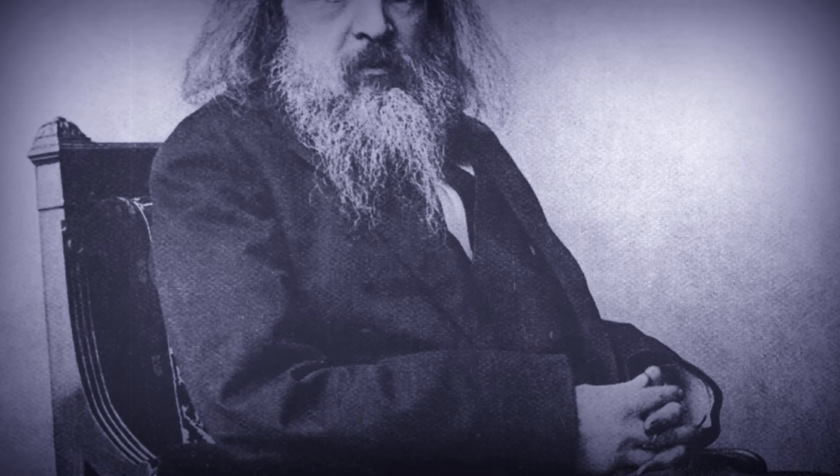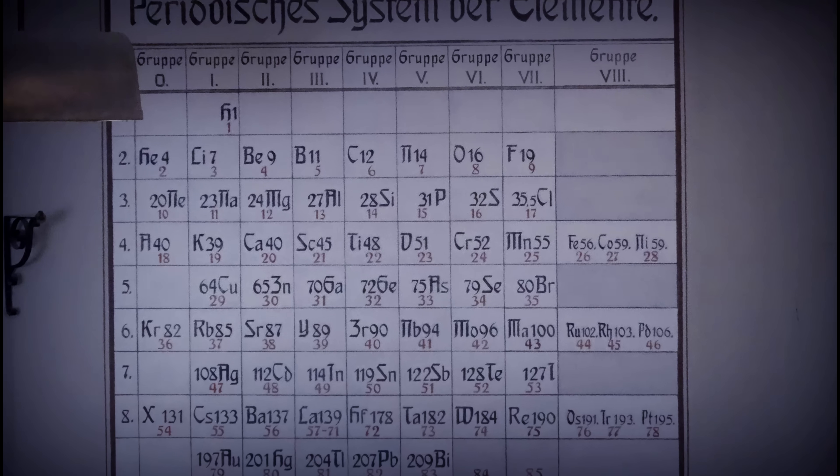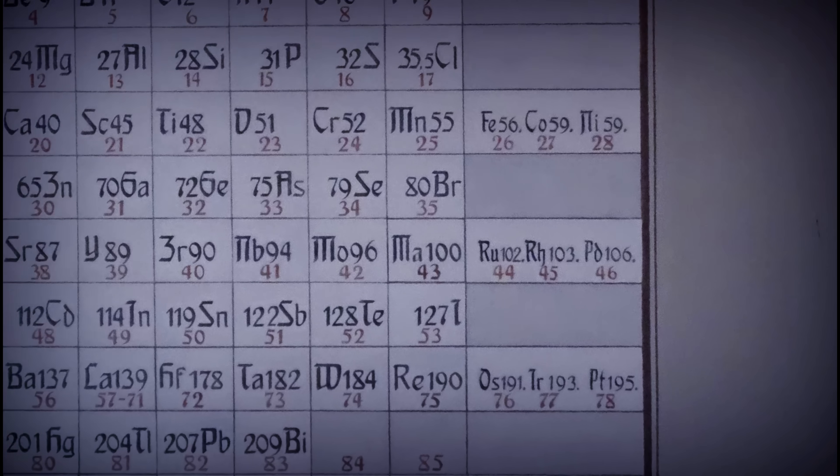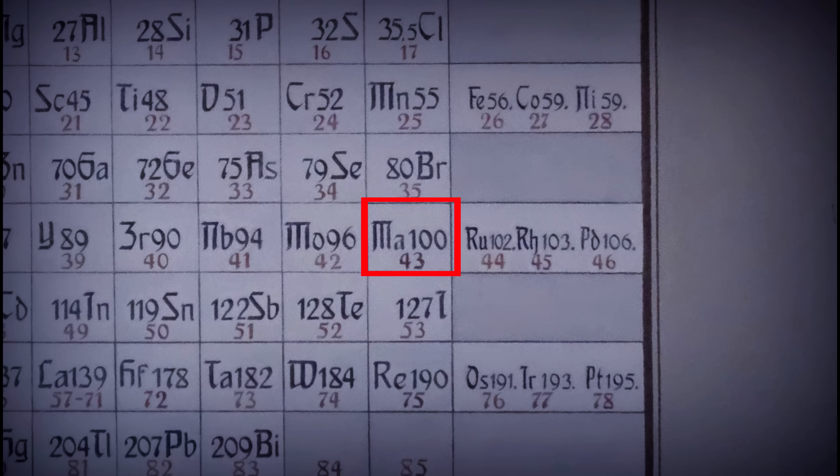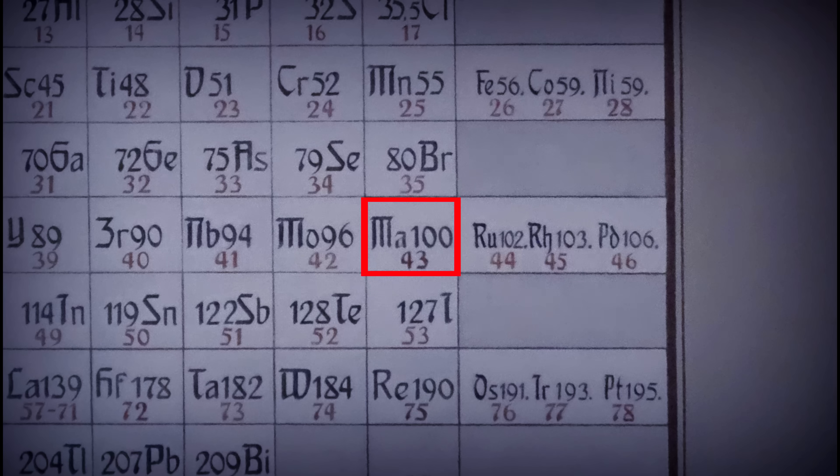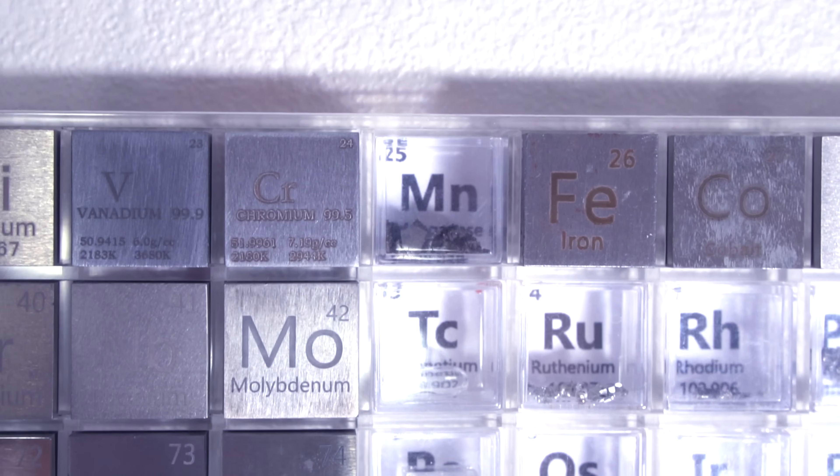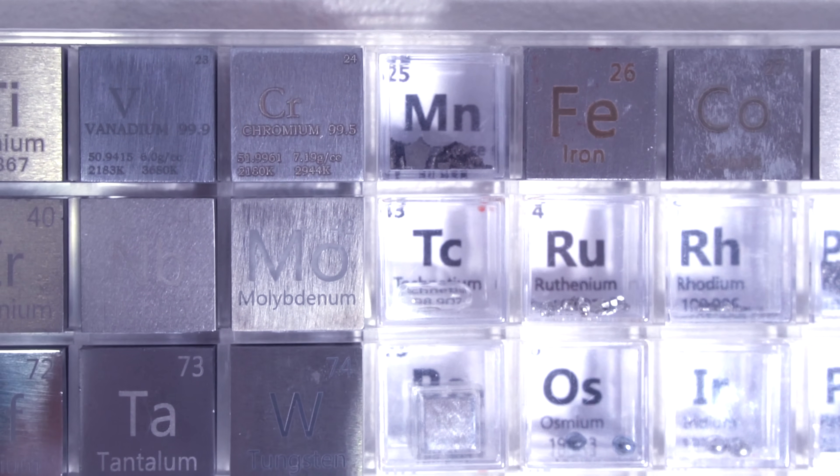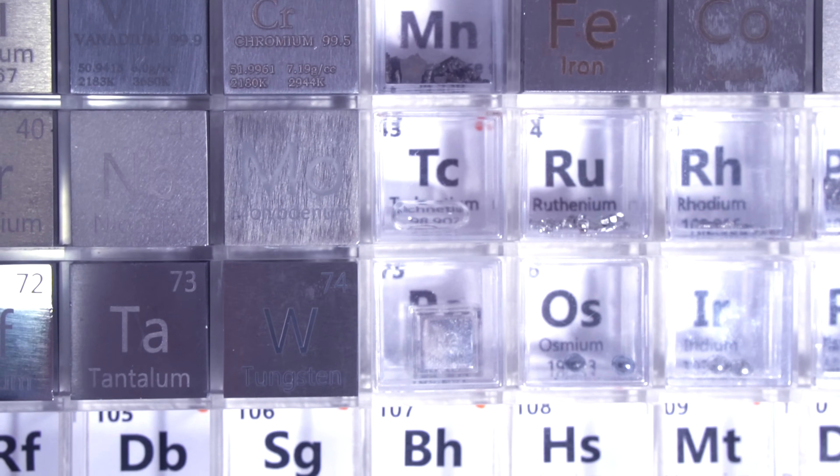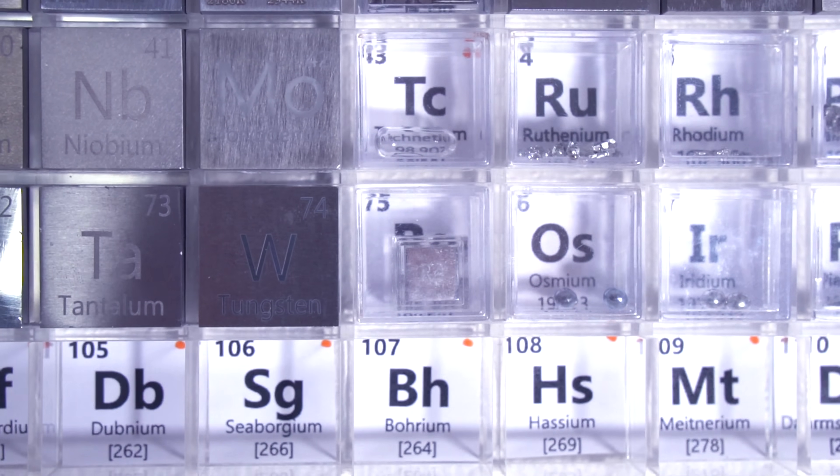The history of the element with the atomic number 43 dates from the 19th century, when Mendeleev predicted the existence of this element in the periodic table between molybdenum and ruthenium. But even 60 years after the assumption of the great scientist, no one could find any traces of this element in the Earth's crust, no matter how diligently people searched for it in minerals containing manganese or uranium.